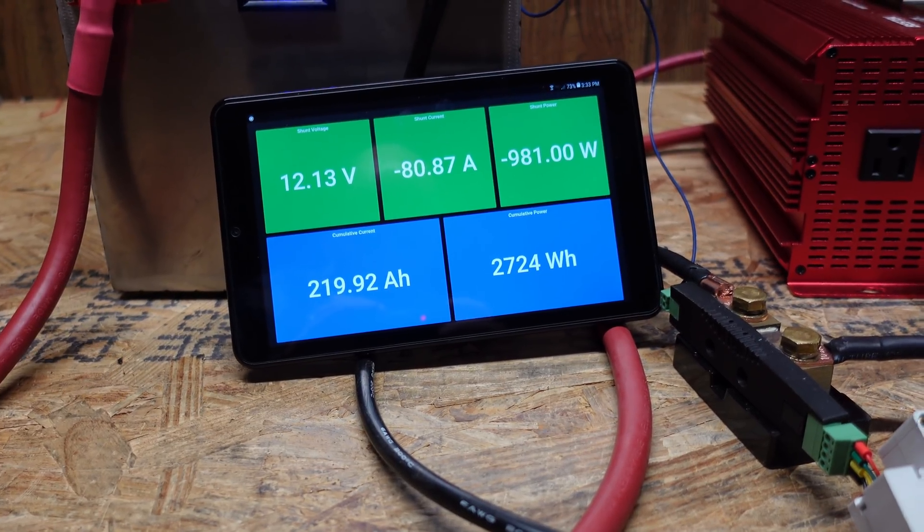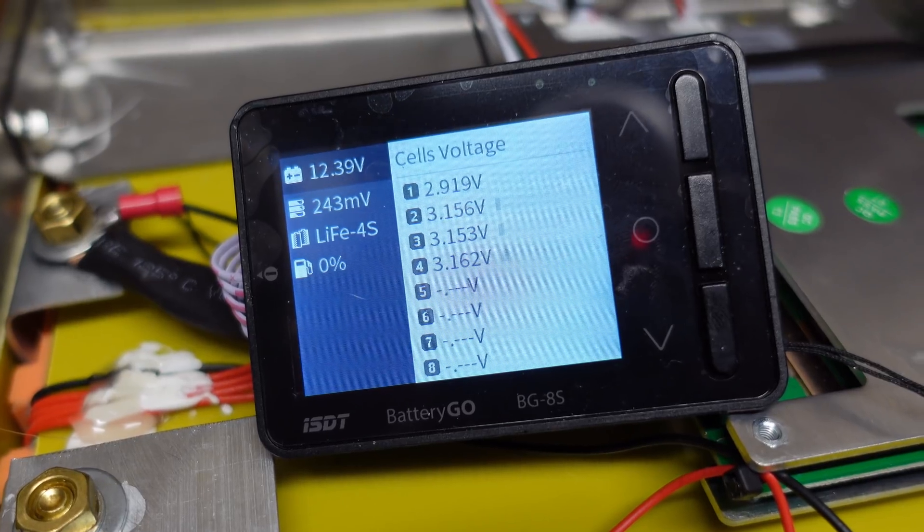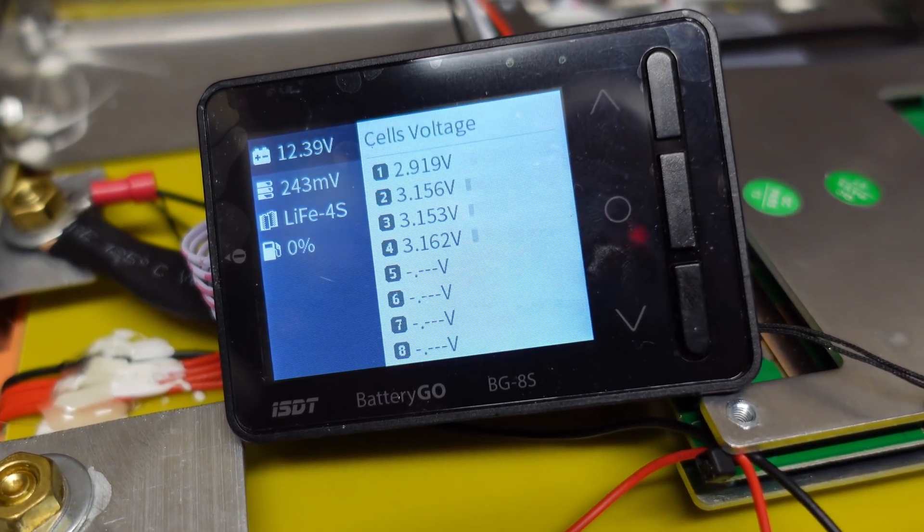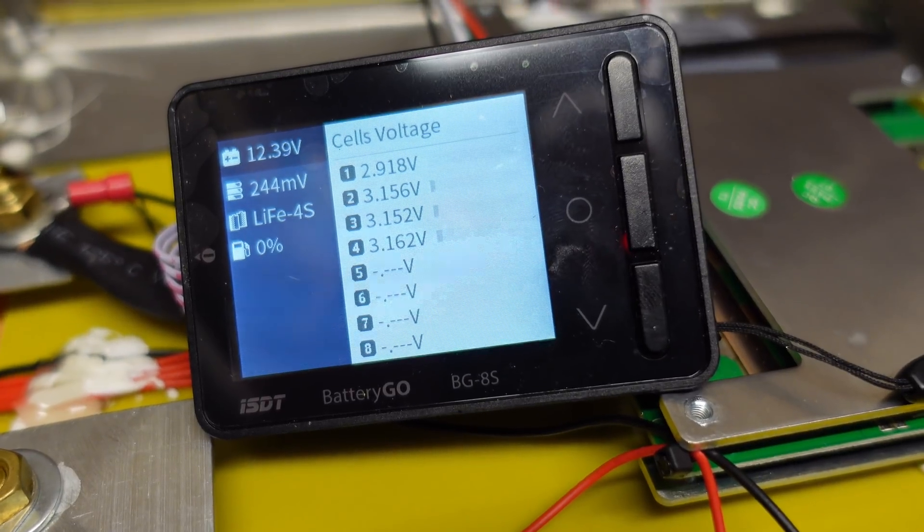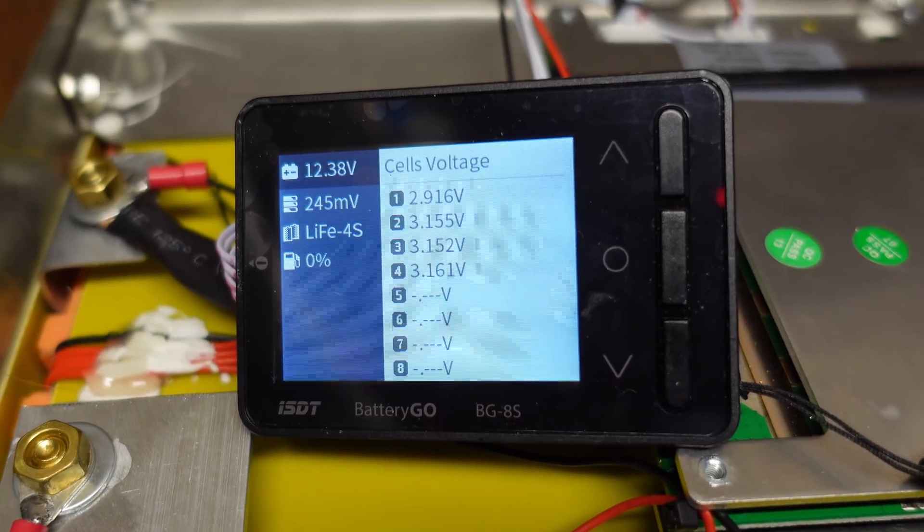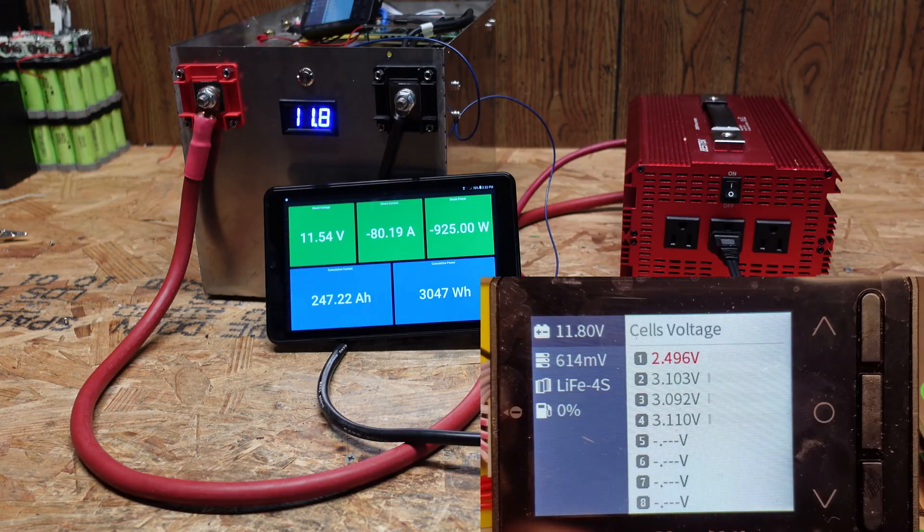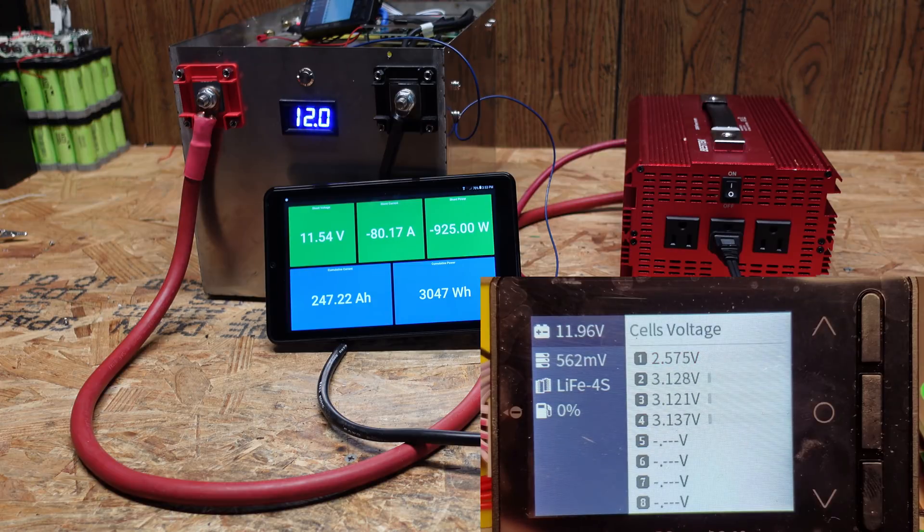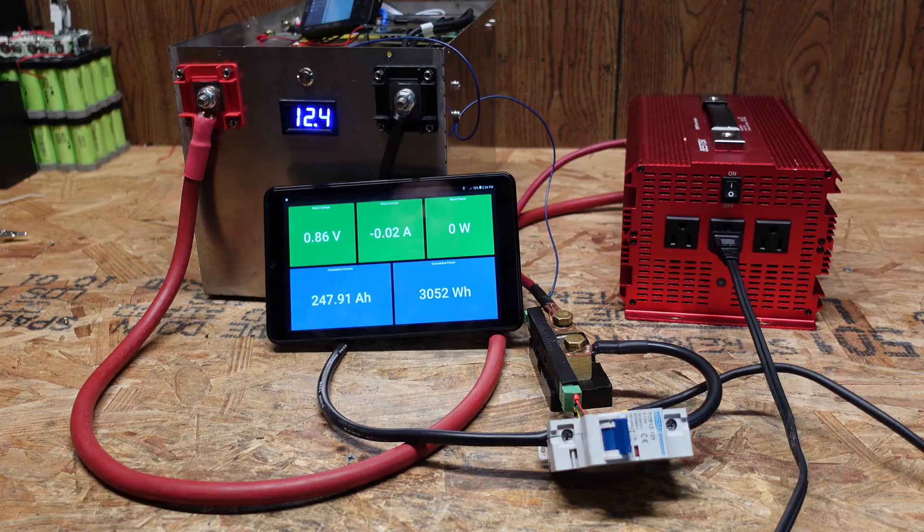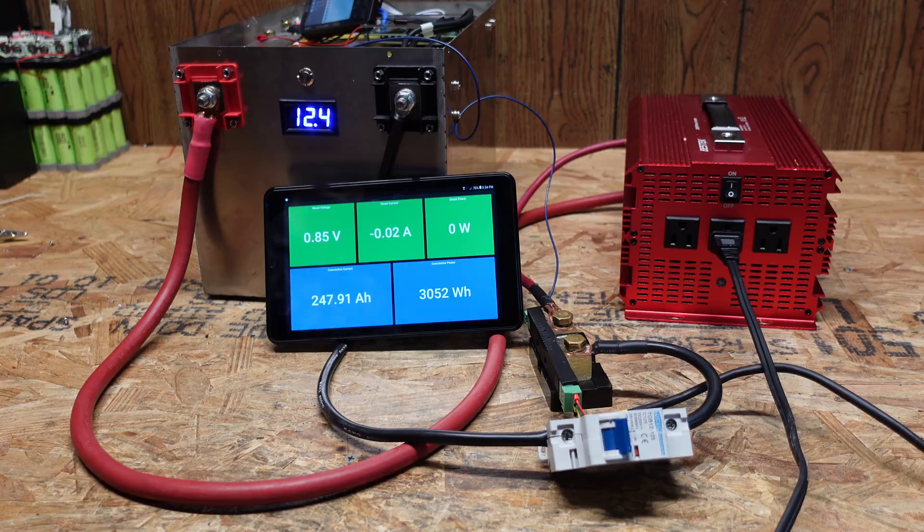We're at 220 amp hours currently. Looking at the Batgo display, we can see cell number one is definitely discharging quicker than the other three, which indicates it has been degraded a little bit due to being undervolted. With lithium iron phosphate, once you hit the three volt mark, it typically drops quickly. There we go. This battery tested at 247.91 amp hours before the BMS low voltage disconnect stopped our test.